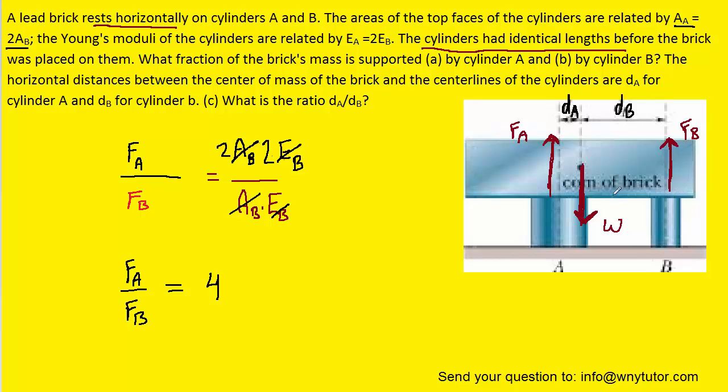Because the brick is in equilibrium, the sum of these forces equals zero. In other words, we can set the two upward forces equal to the single downward force. Looking at the question for parts A and B, it's asking what fraction of the brick's mass is supported by cylinder A. In essence, what that question is asking is the ratio of FA to W. That's really what we need to solve for.